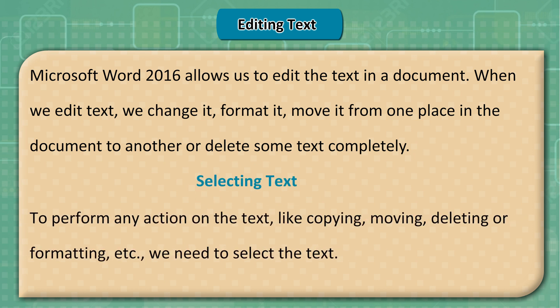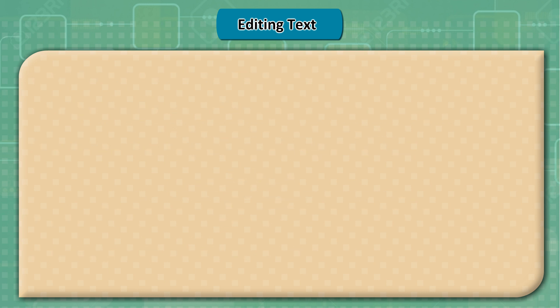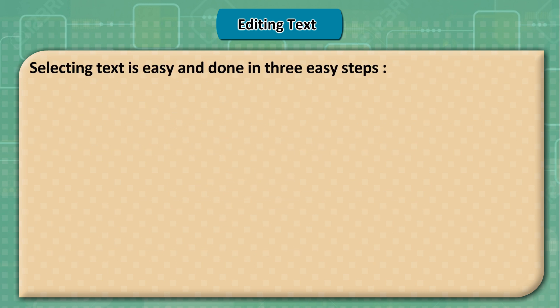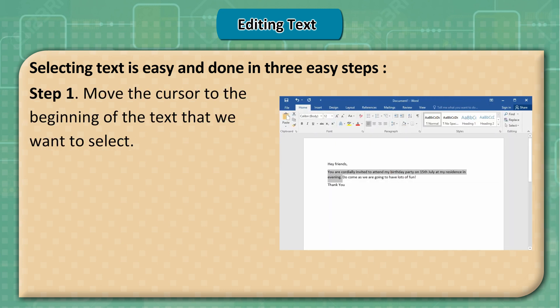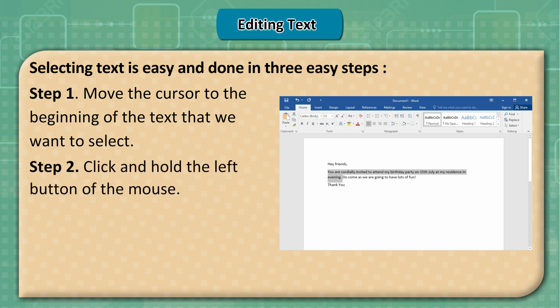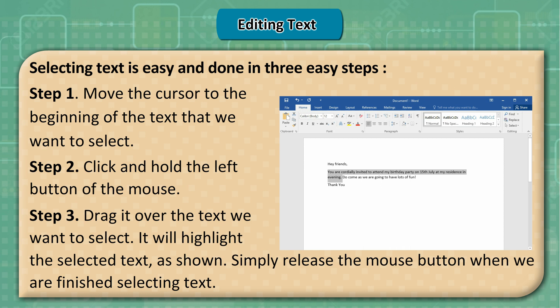Selecting Text: To perform any action on the text — like copying, moving, deleting, or formatting — we need to select the text. Selecting text is done in three easy steps. Step 1: Move the cursor to the beginning of the text to select. Step 2: Click and hold the left mouse button. Step 3: Drag it over the text to select, which will highlight it. Release the mouse button when finished.